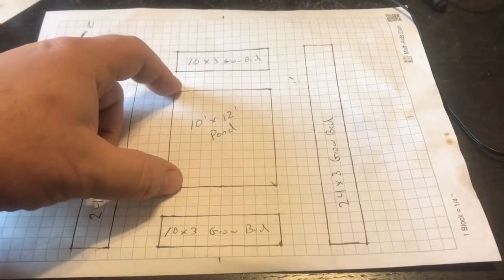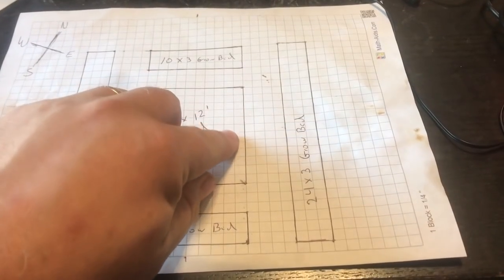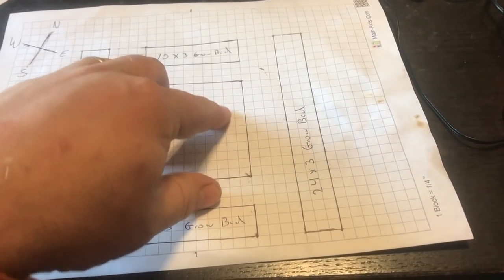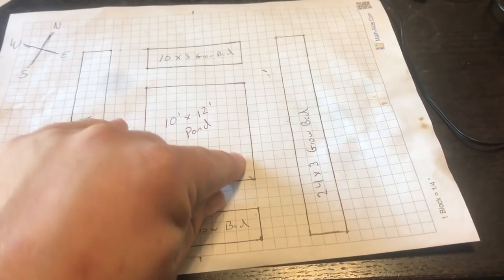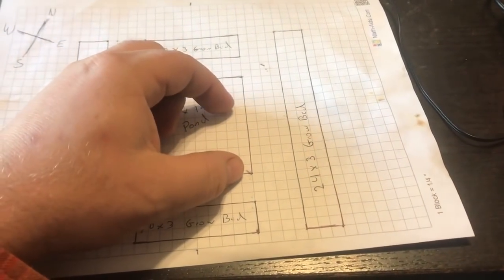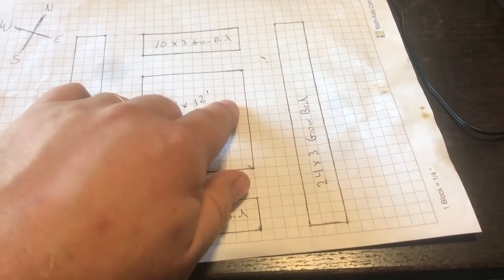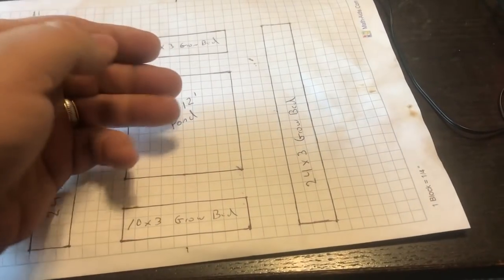So around here there will be, what I do is I build towers out of cinder blocks, and again you can look at some other videos on the timber frame pond, but I build towers out of cinder blocks in the water and I lay 36 inch long tiles on top of them to make benches. So this is basically a whole little habitat for fish under here where they can go underneath.